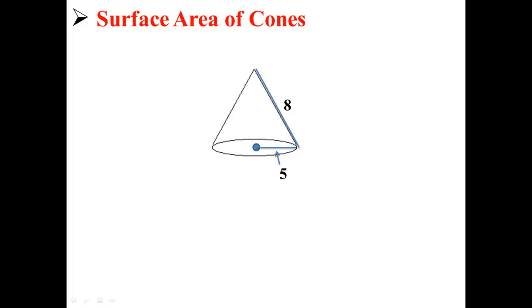Here we have a cone. This cone has a radius of 5 and a length of 8. How would we find its surface area?